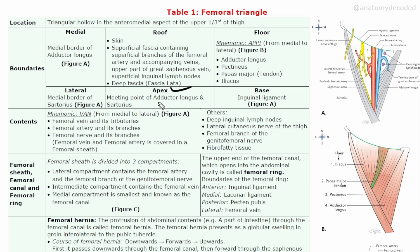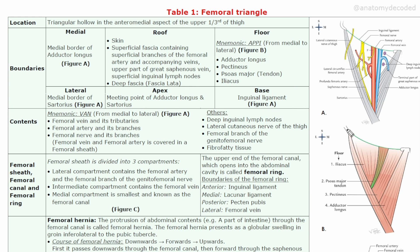The apex of the femoral triangle is the meeting point of adductor longus and sartorius. The base is formed by the inguinal ligament, which is opposite to the apex. The pubic tubercle and the anterior superior iliac spine are at either end, and stretching between these two points is the inguinal ligament that forms the base.